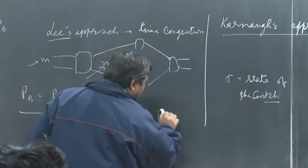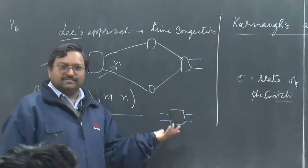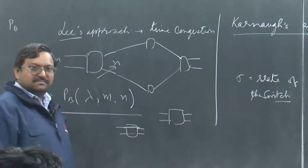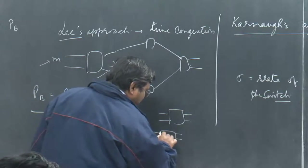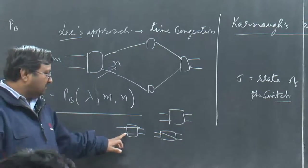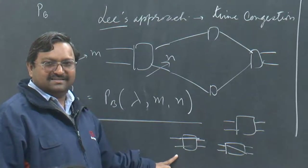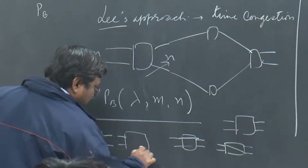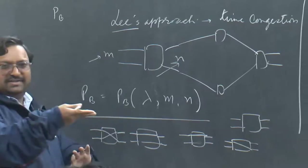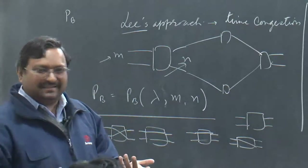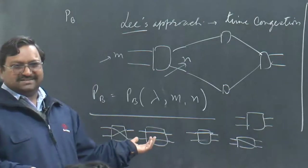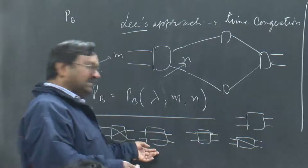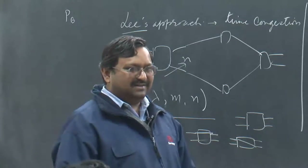For example, in a 2×2 switch: if no connection is set up, that is one state. Another state is when one connection is set up. There can be another configuration for a single connection. But these two single-connection states are mathematically equivalent and can be represented by one entity. If you set up two connections, there are two possible states, and they are also equivalent — you just twist the switch input-output numbering. So there are 5 possible states for a 2×2 switch.